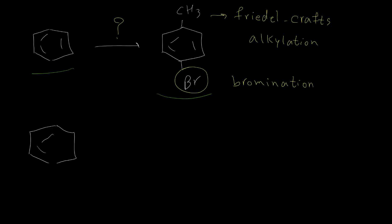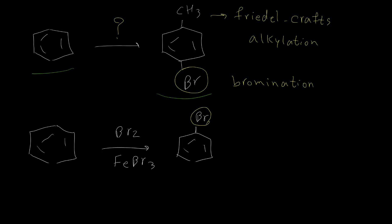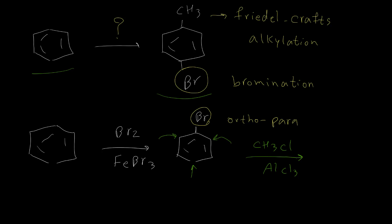I would like to start with bromination. If we perform the bromination reaction — Br2 in the presence of iron bromide — we are going to have one bromine atom on the benzene ring. This bromine group is an ortho and para director, so the second group will attach to the ortho or para position. When I perform the second reaction, the alkylation reaction, we can have CH3 on both of these positions, giving us 2-bromo-toluene and 4-bromo-toluene.